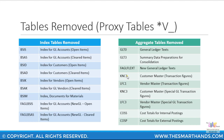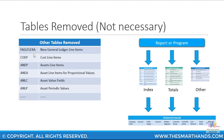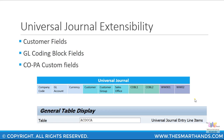The other tables which are removed but indexed via proxy tables include FAGLFLEXT, COEP, ANEP, ANEA, ANLC, ANLP, and so on. To summarize: the index tables, aggregate tables, and certain line item tables have been removed and replaced by the universal journal.